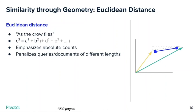The challenge with Euclidean distance is that it emphasizes absolute counts. Two documents could have the same ratio of different words, but if one is a longer document, that would force the distance to appear very large. Before moving on, note that it's not just two dimensions — here we're thinking of two words and their counts, but you could have hundreds of words and their counts. The same rule applies: c² = a² + b² + d² + e² + z², and you can do it in many more dimensions than you can visualize.